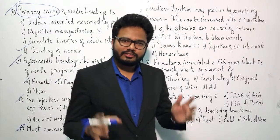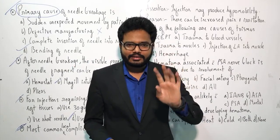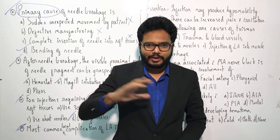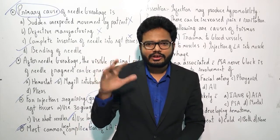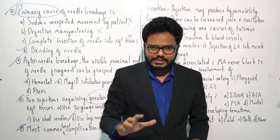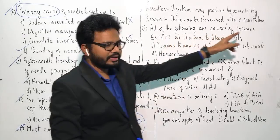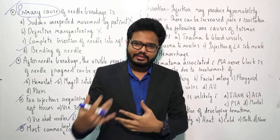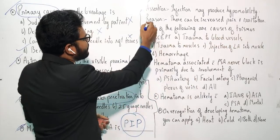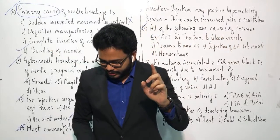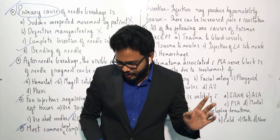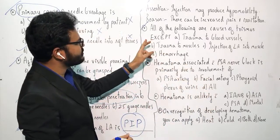Pain leads to hypomobility — for example, severe hand pain limits movement. Because of irritation, inflammation, and other related factors there can be hypomobility. So both assertion and reason are true, and reason justifies the assertion.